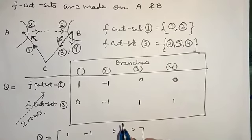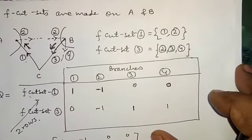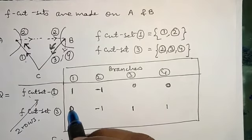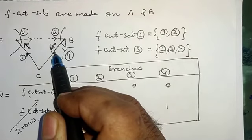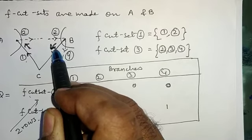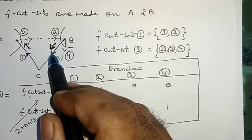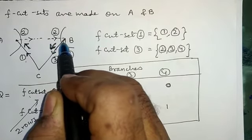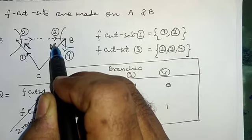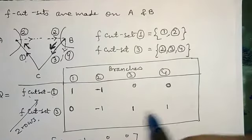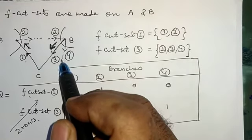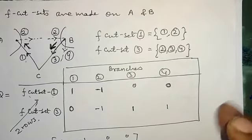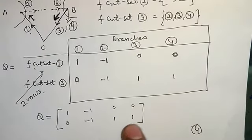For F-cut set number 3, the associated branches are 2, 3, 4. Therefore for 2, 3, 4, I have written 1, and for 1, I have written 0. The twig direction 3 is towards the reference, similar to reference, therefore branch number 3 will be with positive sign. Branch number 2 is towards the isolated node B but reference is away, therefore 2 will be with negative sign. And branch 4, which is away, means it is similar to the direction of reference, therefore it will be considered with positive 1. This will be the F-cut set matrix Q.